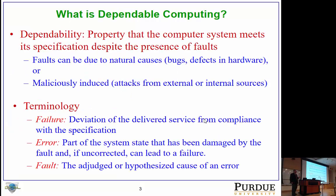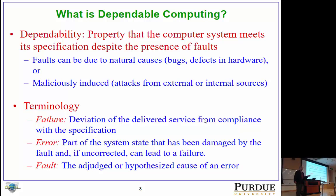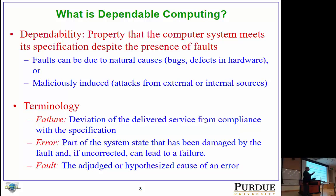What is dependable computing? Very simply, it is the property that your system is going to be able to provide the functionality it is designed and developed for, within the correct time bounds, and despite the occurrence of two different kinds of faults: unintentional or naturally occurring faults like software bugs or hardware race conditions, and maliciously induced faults — attacks injected from outside or insider attacks.